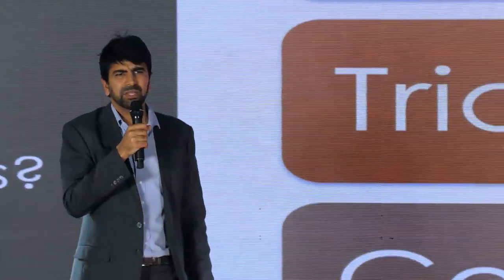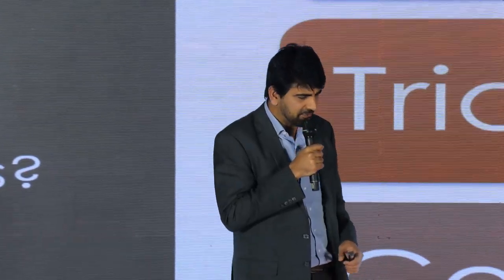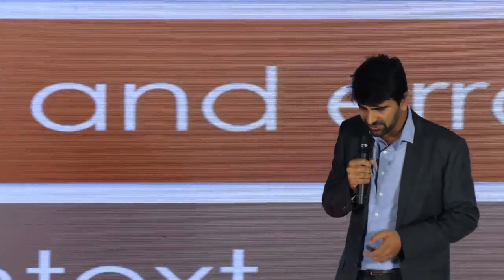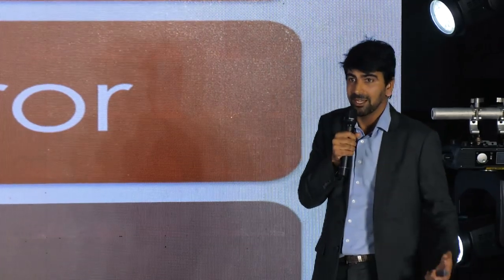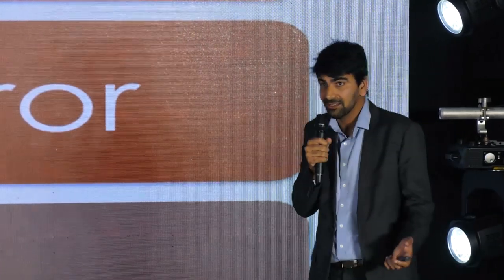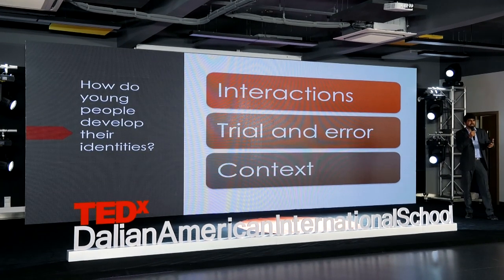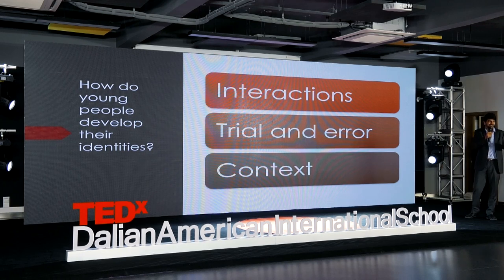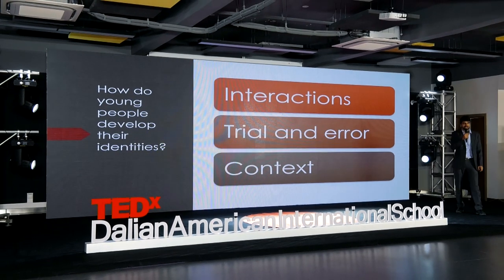So how do young people develop their identities? After a lot of research, I've figured out that most young people develop their identity through interactions — be it social, be it online these days — and by trial and error, and by being in different contexts. So context is very important in them finding out what their identity is.